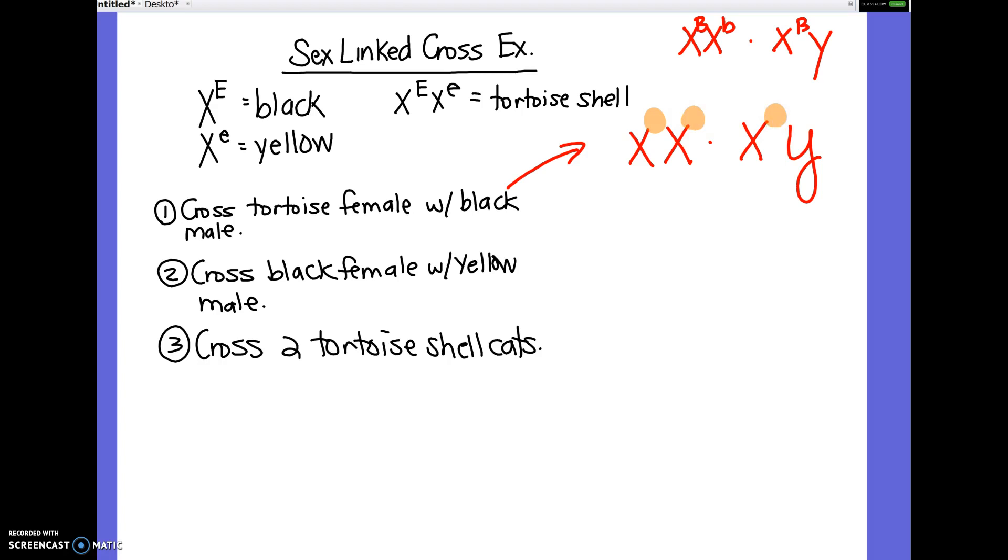So what would be the genotype for the tortoiseshell female? So she would be X big E, X little E. And then the male that's black, he's going to be X big E, Y. So this would be our cross. So now we do this just like the Punnett squares you've seen before. So we're going to do X big E, X little E, X big E, Y.